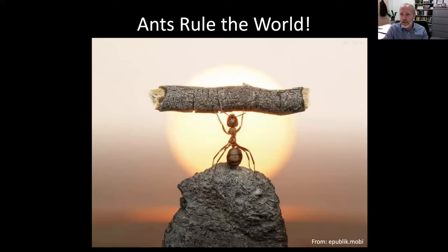So this overarching idea is that ants sort of rule the world. I always like to emphasize to my entomology students: we're not in the age of mammals or the age of dinosaurs. We're in the age of insects, and we have been in the age of insects for about 320 million years. But it wasn't always the case that ants dominated the landscape.